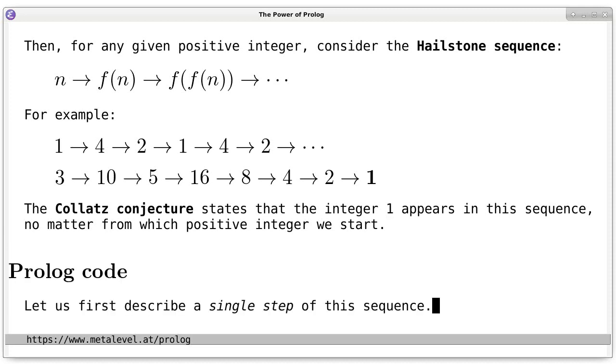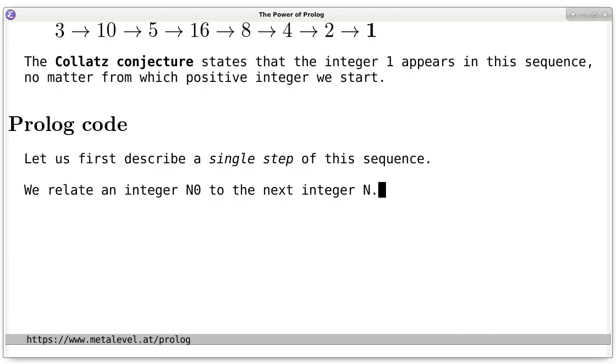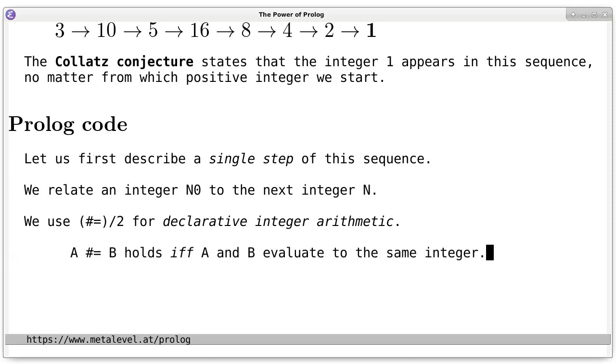In Prolog, let us first describe a single step of this sequence. Let us describe the relation of some integer n0 and the next integer n. And since we are reasoning about integers, we use #= for declarative integer arithmetic. The predicate #= holds if A and B evaluate to the same integer.